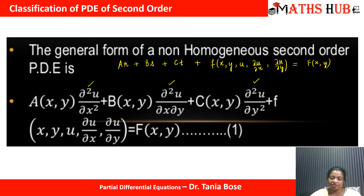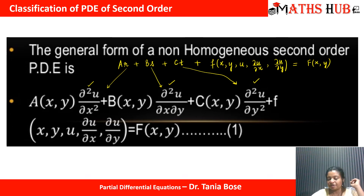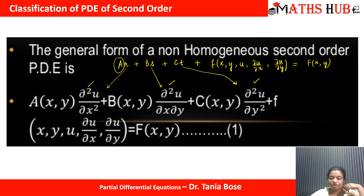Here, r is ∂²u/∂x², s is ∂²u/∂x∂y, and t is ∂²u/∂y². Whichever equation is given to classify, we compare it with the standard equation and by comparing, we calculate the coefficients a, b, and c.